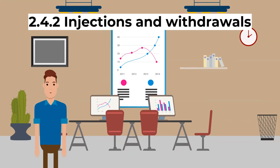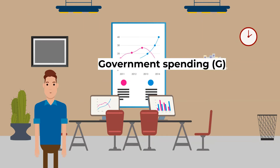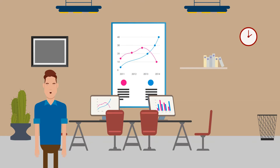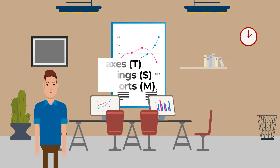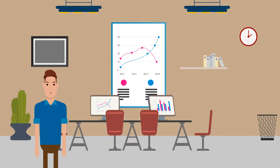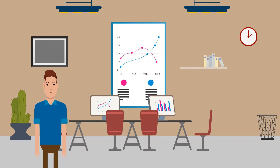Let's look at injections and withdrawals. Injections are monetary additions to the economy: one, government spending; two, investment; three, exports. Withdrawals or leakages are where money is removed from the economy: one, taxes; two, savings; three, imports. If the sum of injections is greater than the sum of leakages or withdrawals, then the economy will be growing, whilst if injections are smaller than withdrawals, it will be shrinking.